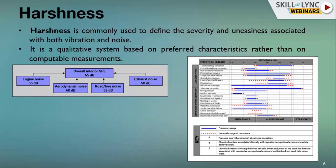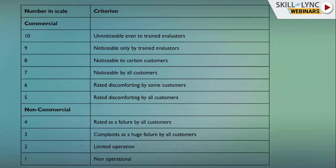Harshness is the severity of uneasiness associated with both vibration and noise. It is a subjective term — it cannot be measured like vibration or noise with a measuring tool. It is assessed by experts based on a chart describing the harshness level in the vehicle. As an example, if the overall noise in a vehicle is 65 decibels, the contributing components might be: engine at 55 dB, aerodynamic noise at 60 dB, road and tire noise at 58 dB, and exhaust noise at 50 dB. After isolation, these combine to reach 65 dB at the passenger's ear.